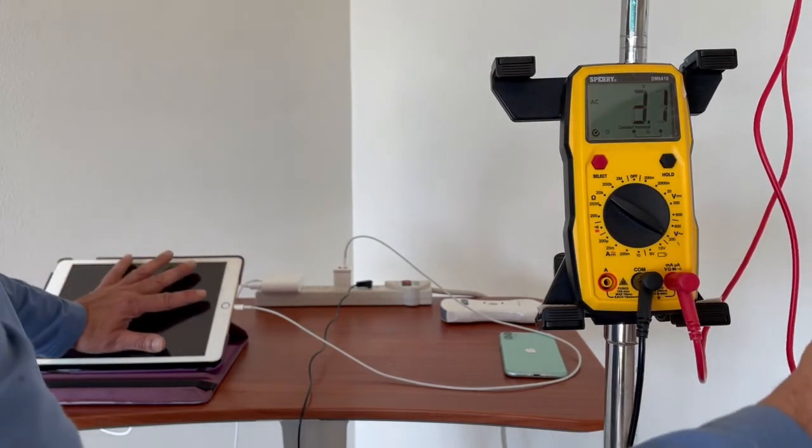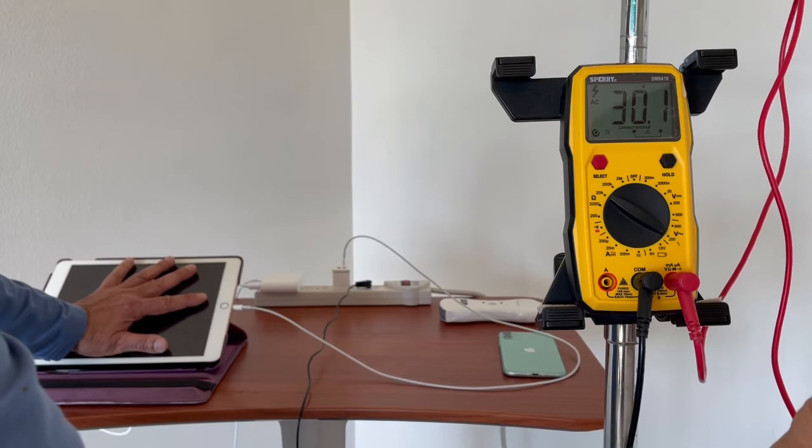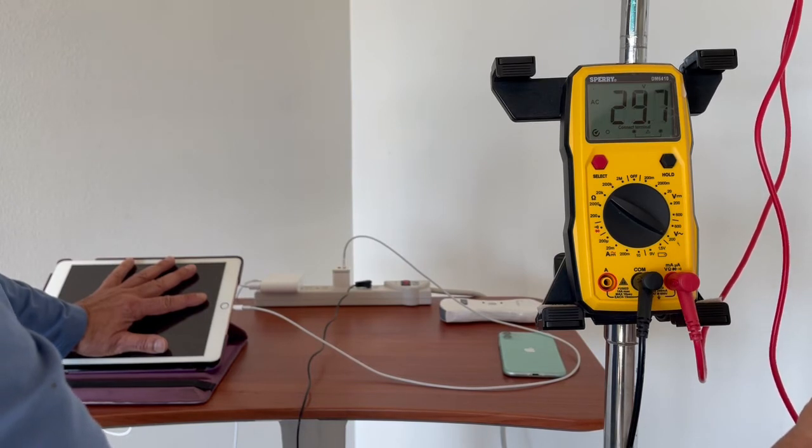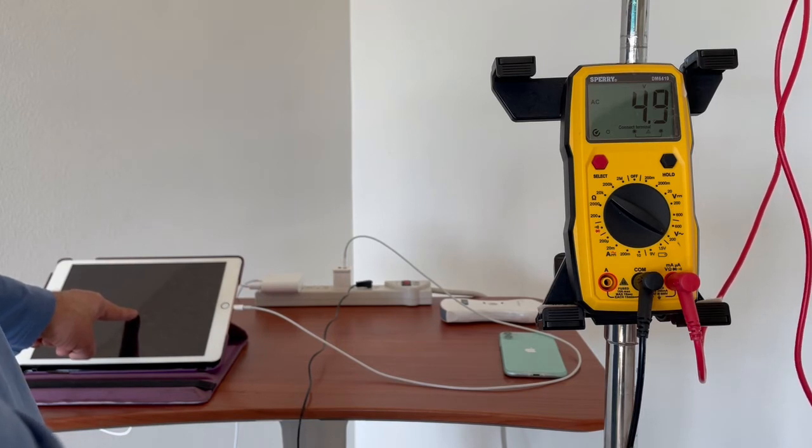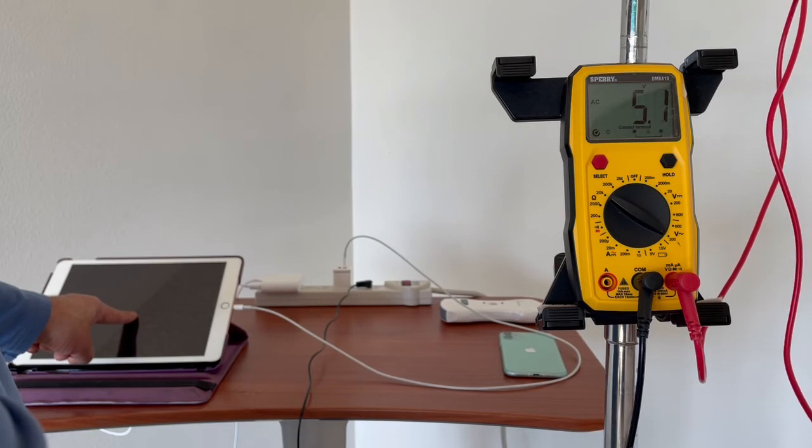So now, of course, the larger the contact area, the more voltage will go back and forth. So if I just have a finger, that's only 4.8, but then I can actually feel the electricity going through my finger.